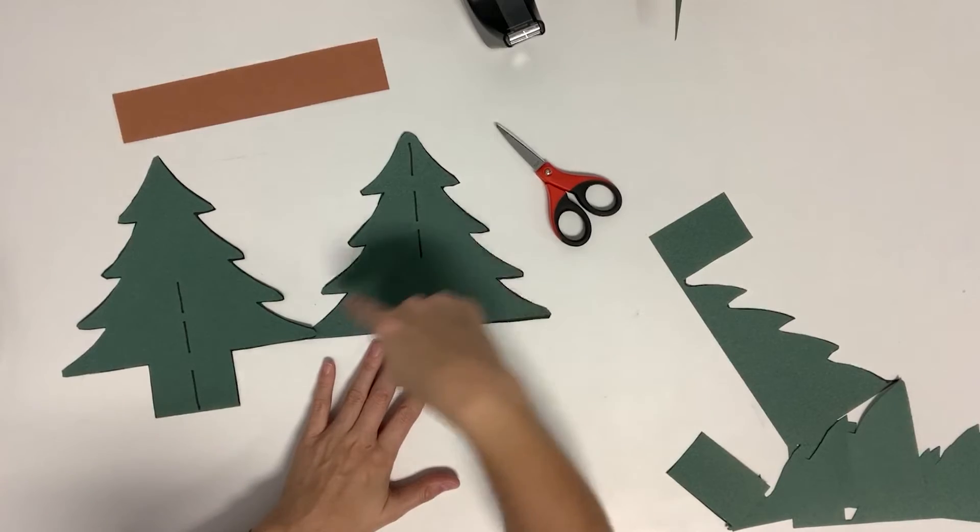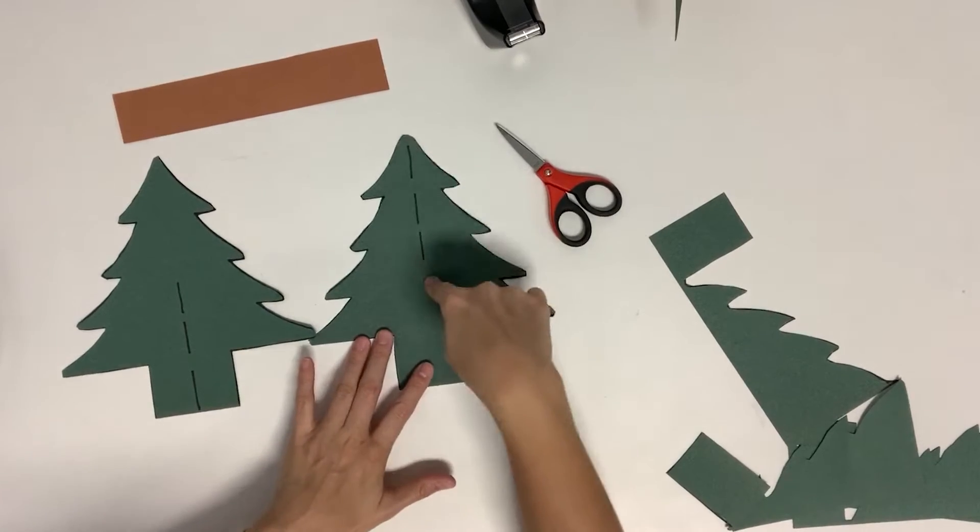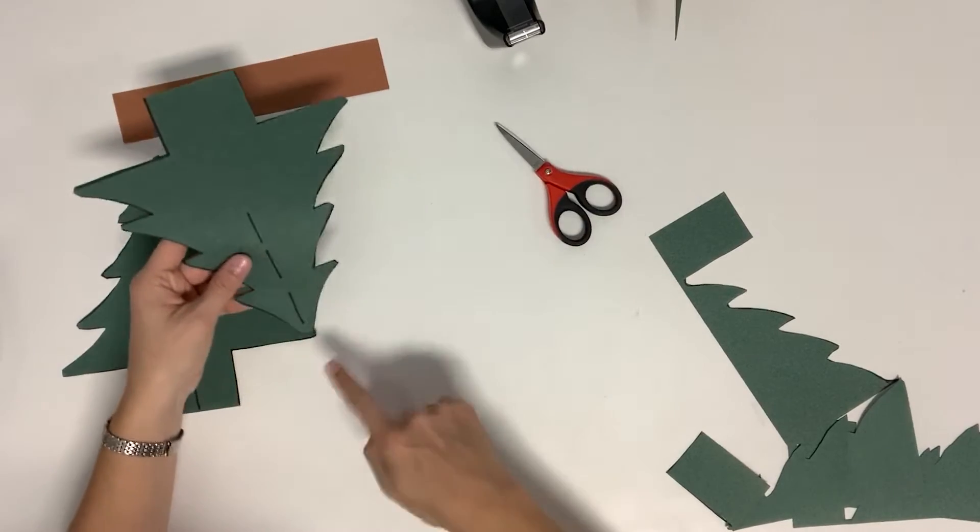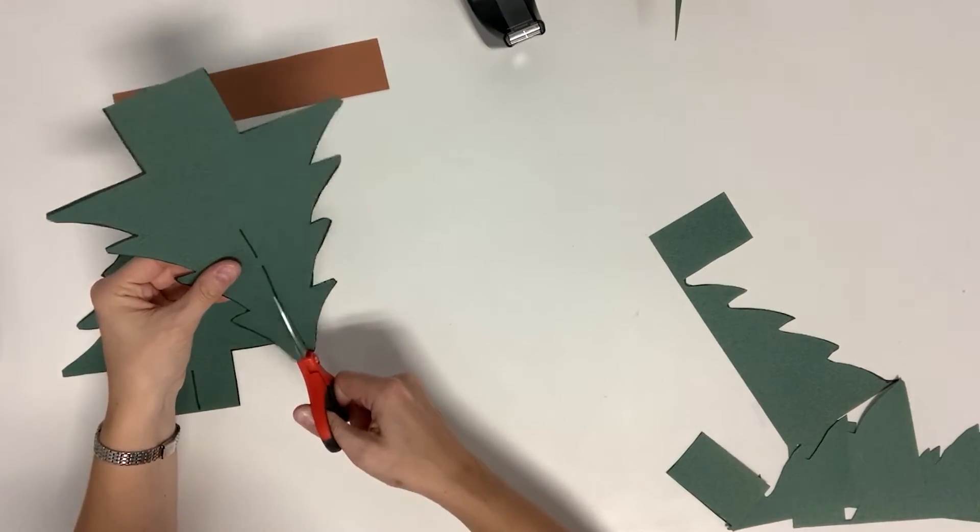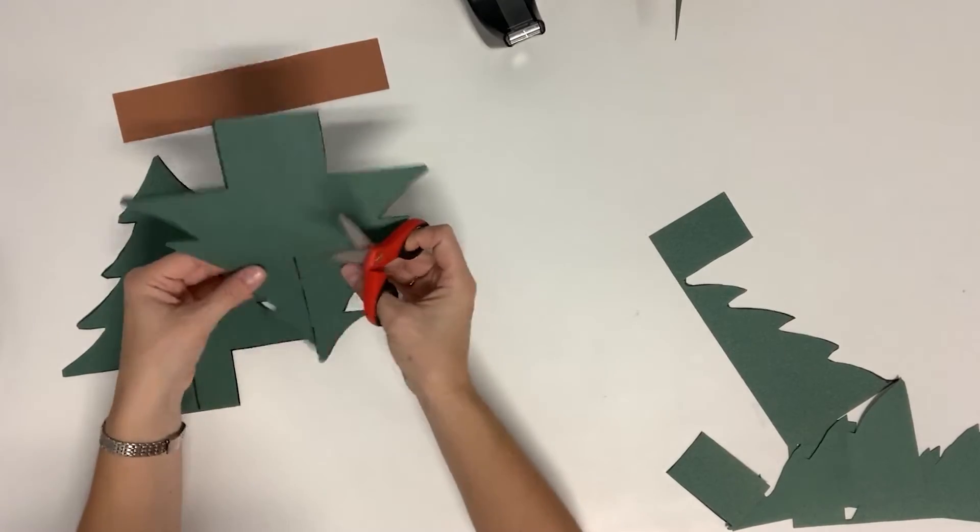Now I'm going to take the one first that has the line coming down from the top, and I'm just going to cut the slit along this line. Just like that.